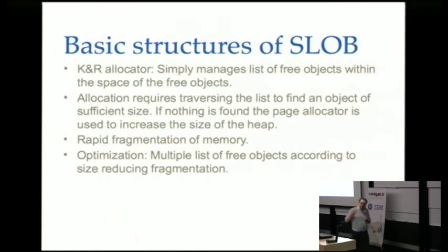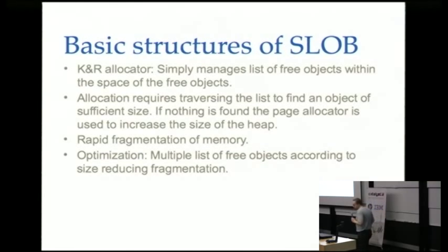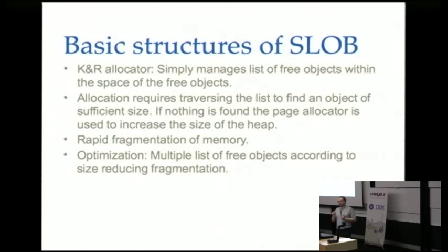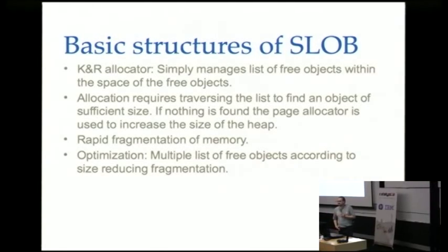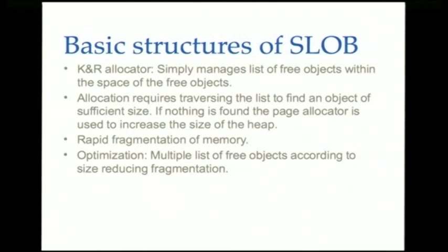Now the basic structures of the allocators, starting with the simplest. Slob manages a list of free objects within the space of the free objects themselves — the free data is used to maintain the list, so there's no overhead when objects are allocated. However, to allocate an object of a certain size you must traverse the list to find a hole of the right size, and if sizes don't match exactly, you cause increasing fragmentation. Slob should only be used for small deployments that don't do much with memory.